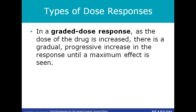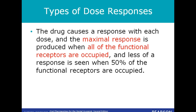In a graded dose response, as the dose of the drug is increased, there is a gradual, progressive increase in the response until a maximum effect is seen. The drug causes a response with each dose and the maximal response is produced when all of the functional receptors are occupied.